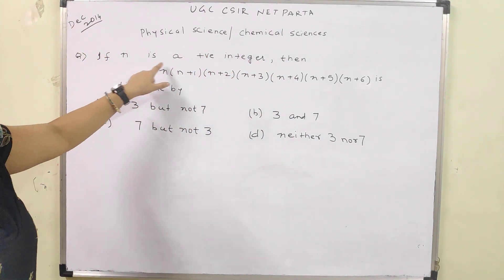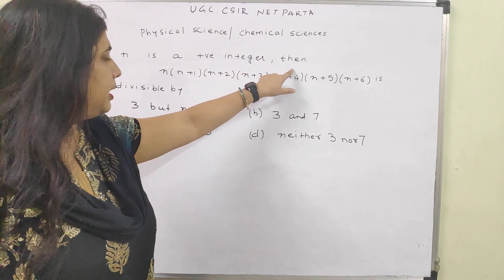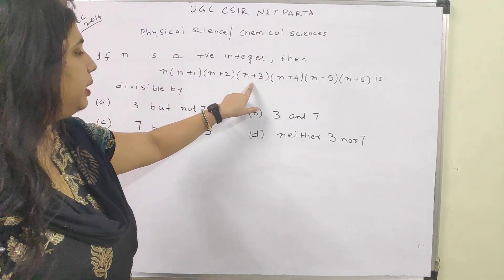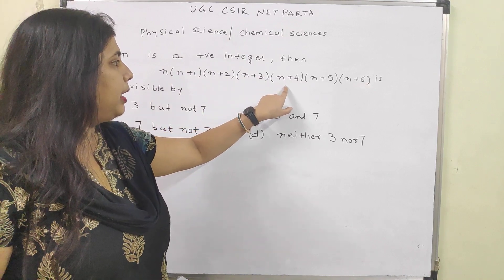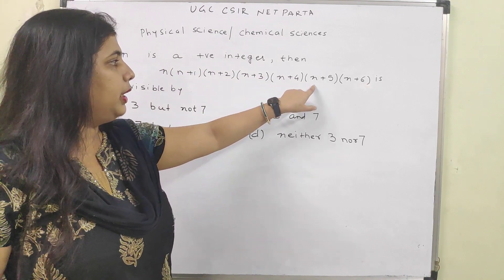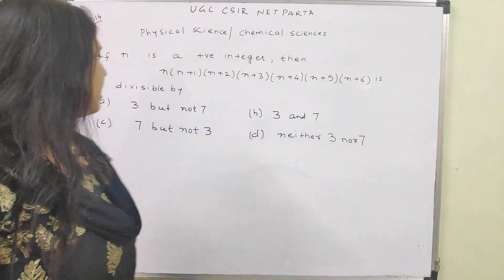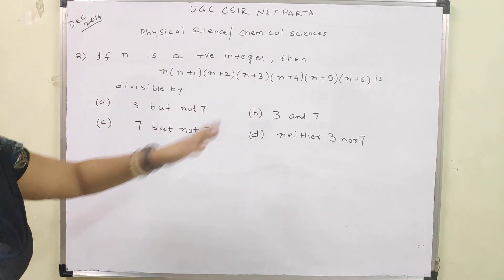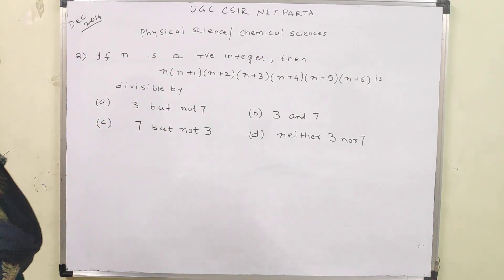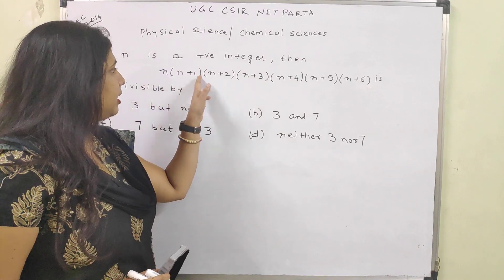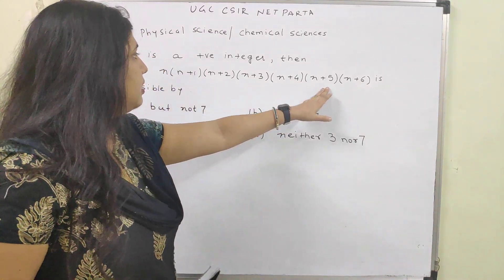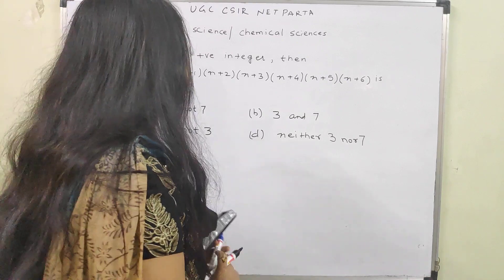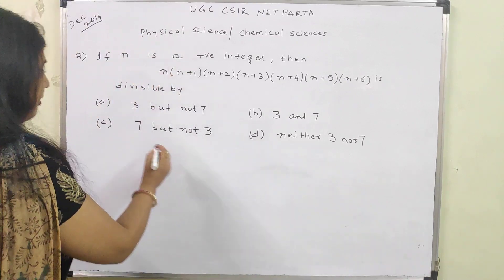If n is a positive integer, then n × (n+1) × (n+2) × (n+3) × (n+4) × (n+5) × (n+6) is divisible by 3 but not 7, and 4 options are given. Let us try to understand what this is and how it works in terms of divisibility by different numbers.